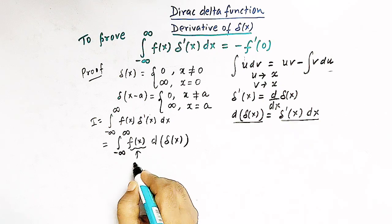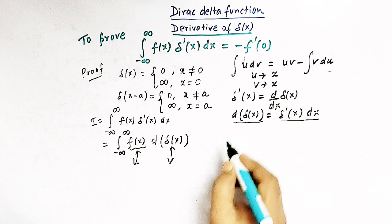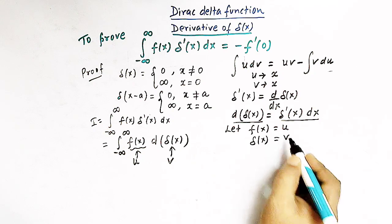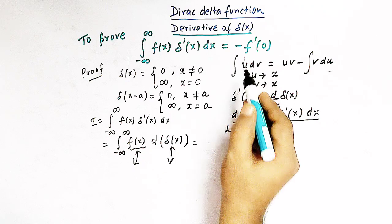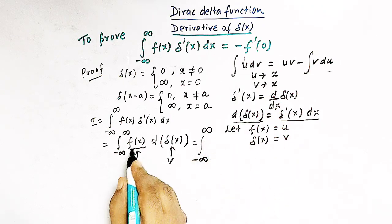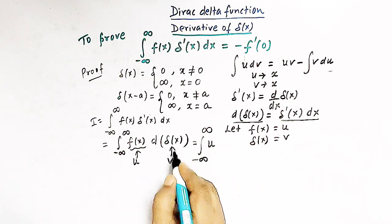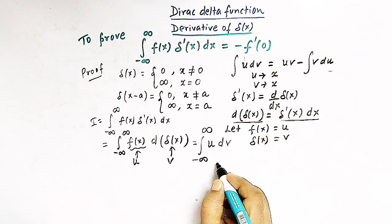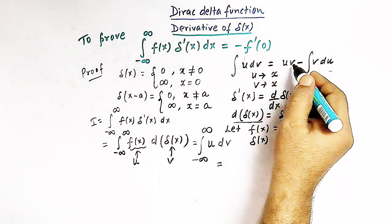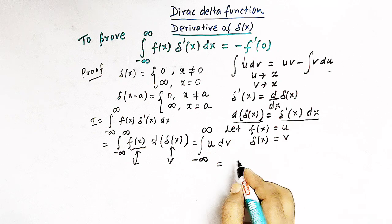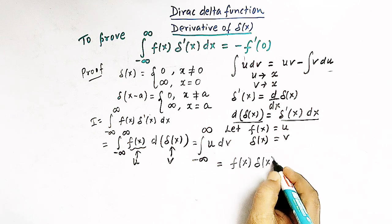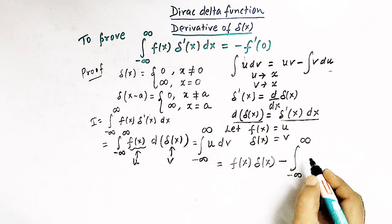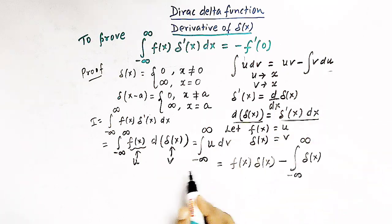We take f(x) as u and delta(x) as v, so d(delta(x)) is dv. Applying the integration by parts rule, we write the product u times v — that is f(x) times delta(x) — evaluated from minus infinity to infinity, minus the integral from minus infinity to infinity of v times du, where v is delta(x) and du is d of f(x).